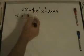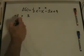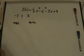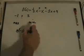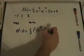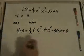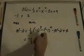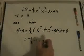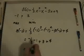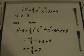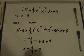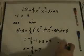f(-1) = (1/3)(-1)³ - (-1)² - 3(-1) + 4 = -1/3 - 1 + 3 + 4 = -1/3 + 6 = -4/3 + 21/3 = 17/3. So the local maximum point is (-1, 17/3).